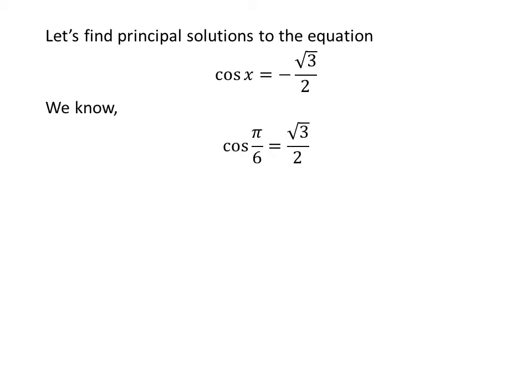We know the value of cosine of pi upon 6 is square root of 3 upon 2. We also know the famous trigonometry identity: cosine of pi minus a is equal to minus cosine of a. The proof of this identity is given in the video appearing in the upper right corner, and the link is also given in the description section.